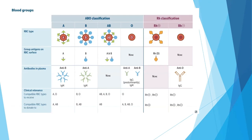Let's talk about blood group classifications. In the ABO system: type A has A antigens on the RBC surface; type B has B antigens; type AB has both A and B antigens; and type O has no antigens on the surface. Regarding antibodies: type A individuals have anti-B antibodies; type B individuals have anti-A antibodies; type AB individuals have neither; and type O individuals have both anti-A and anti-B antibodies.